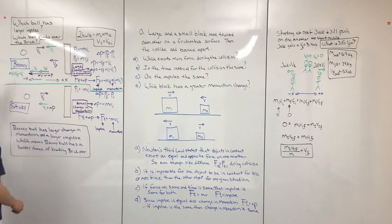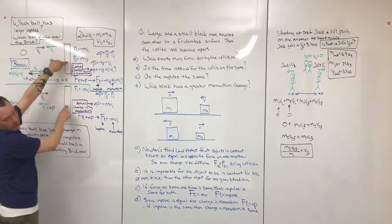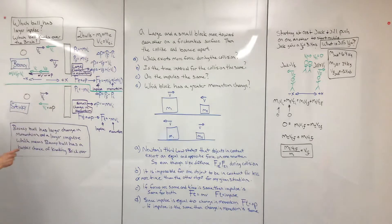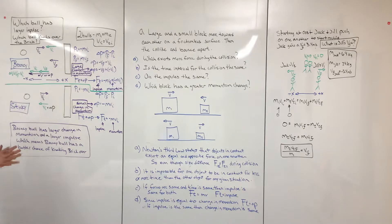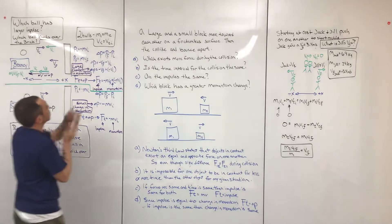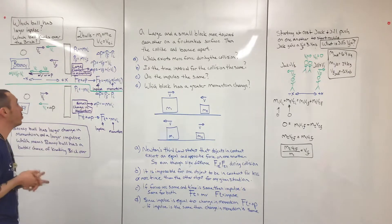The first question is talking about two balls. One ball is bouncy, one ball is sticky. And this is a bowling pin or a brick — we call it a brick here. We want to know which one of these two balls has a more likely chance of knocking the brick over, and which ball has the larger impulse. In order to do that, we're only given the mass and velocity, so we can really only look at changes in momentum.